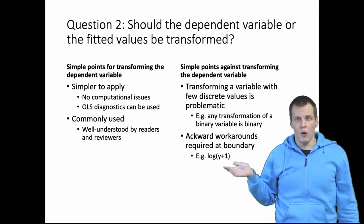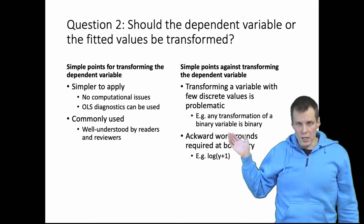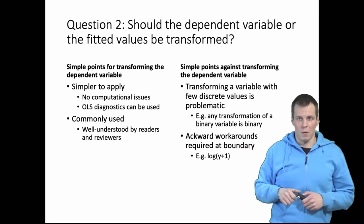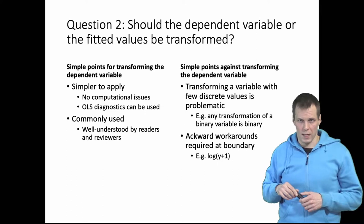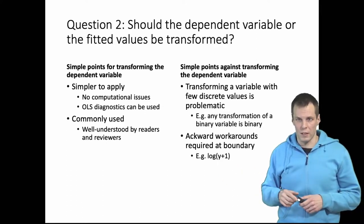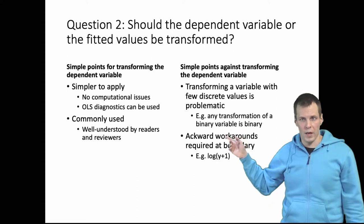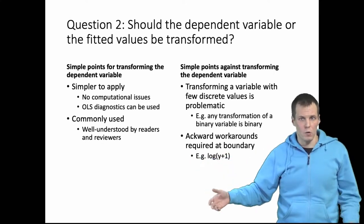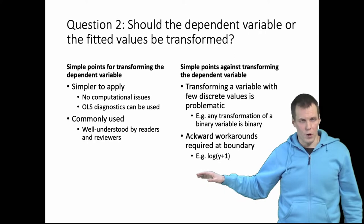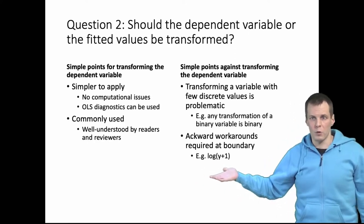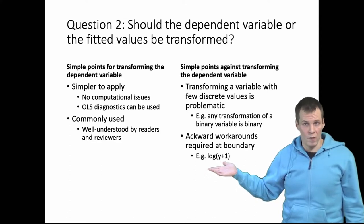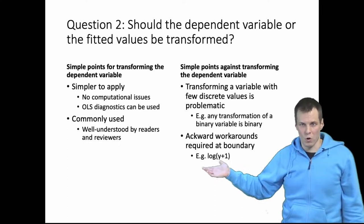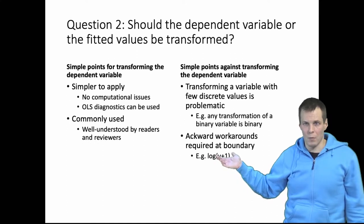There are points against transforming. Transforming a variable with a few discrete values is problematic. If you have a count variable with 1, 2 and 3 then trying to do some kind of inverse Poisson transformation on that wouldn't make much sense because it still has three discrete values. If you have 1s and 0s, the binary dependent variable, transforming a binary dependent variable will give you another binary variable. It doesn't do anything. And then you have the issue that if you want to explain company size and you want to explain that with an exponential function, some companies have zero revenues. So how do you deal with those zeros? Because you can't take a log of zero and then you need these awkward workarounds where you add plus 1 to the dependent variable before you take the log.